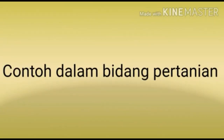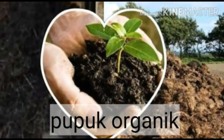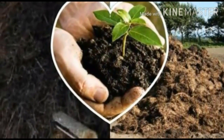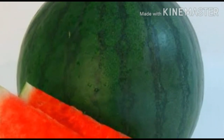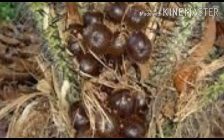Contoh yang kedua, dalam bidang pertanian, kita bisa memanfaatkan ilmu biologi untuk membuat pupuk organik, misalnya dari kompos dan pupuk dari kotoran ternak. Selain itu, digunakan untuk menghasilkan bibit unggul, contohnya ada semangka tanpa biji, kemudian salak yang rasanya manis, tidak sepat.